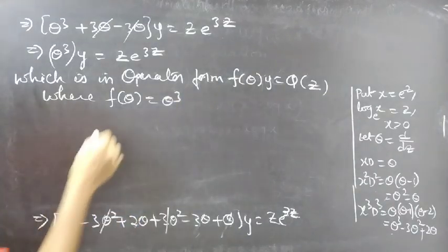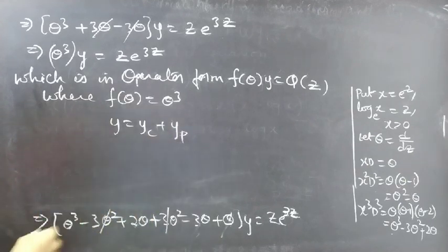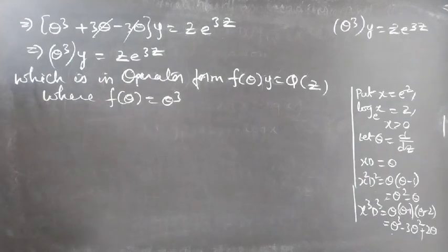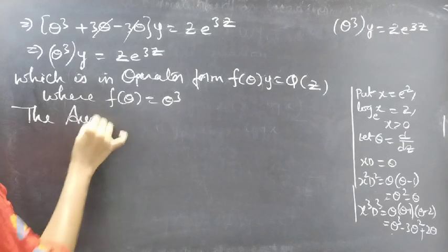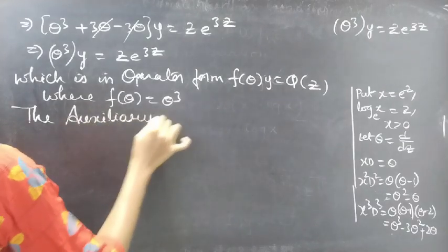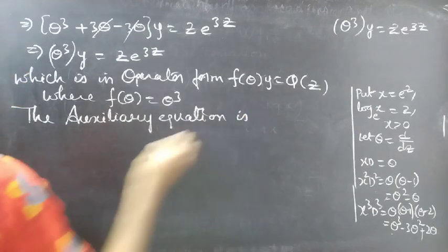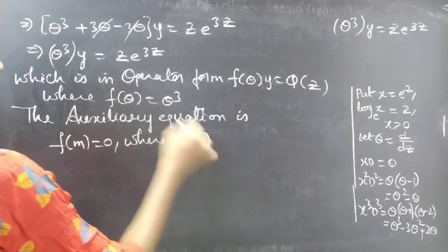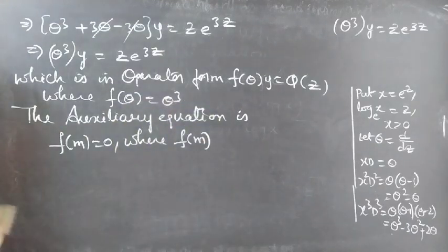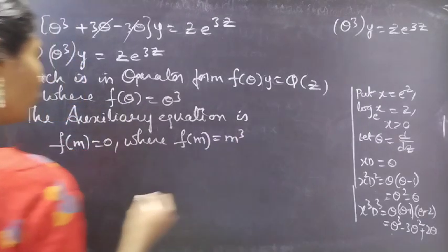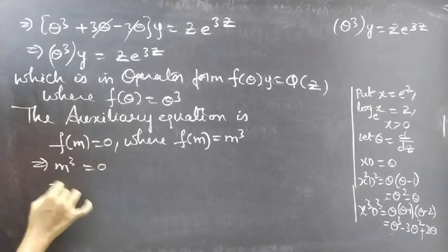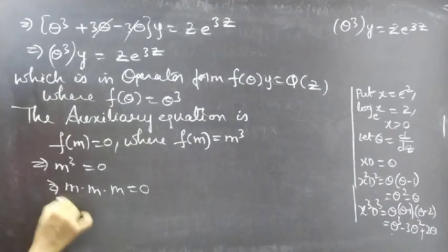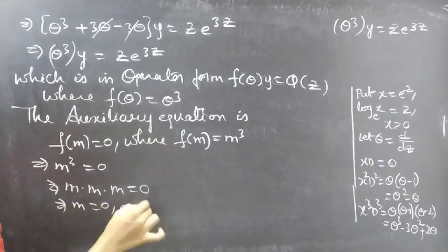Now we need to find the general solution y equals yc plus yp. First we will find yc using the auxiliary equation and later we'll go for yp. The auxiliary equation is f(m) equals 0, where f(m) equals m cubed. So our auxiliary equation becomes m cubed equals 0, which we write as m times m times m equals 0. Equating each factor to zero, we get m equals 0, 0, 0.